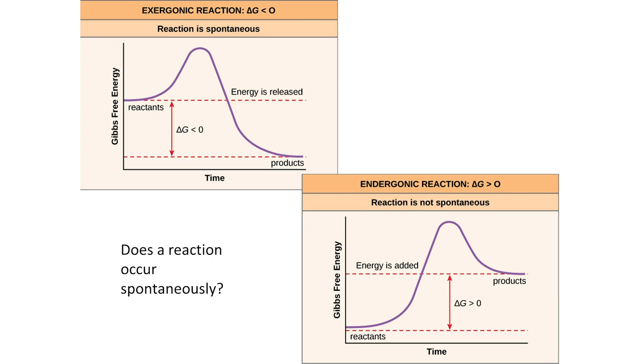We can portray the thermodynamics, the free energy changes, using various graphs. And delta G negative reactions typically are shown schematically as a ball rolling down a hill. Or you can draw a graph where you can see that if you plot energy against time, you see that there's a certain amount of energy released as the products are formed.